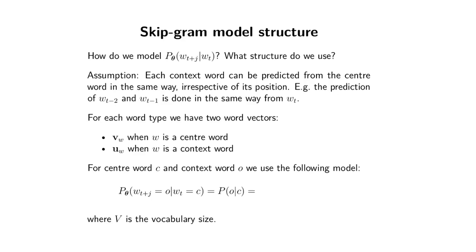This is the crucial question: how do we model the probability for a context word given a center word? What is the structure that we will use? Here we really get to the third assumption — that irrespective of where the word occurs in the context window, we're going to treat this probability the same.